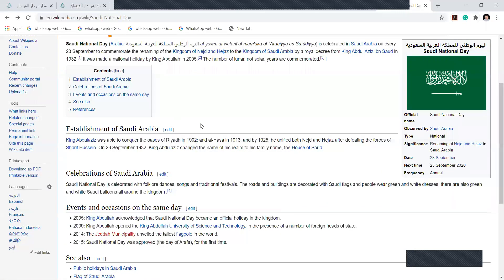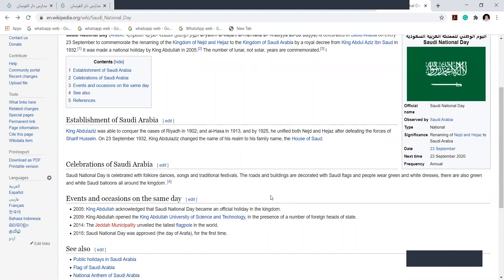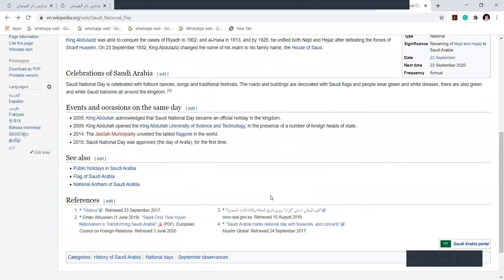It was 1932, girls. Saudi Arabia was founded in 1932, and that's the reason you are celebrating the national day here. Who actually conquered it was King Abdulaziz, who conquered the oasis in Riyadh in 1902, and then he unified by some forces. On 23rd September 1932, he changed the name of the realm to his family name, the House of Saud. And how do you all celebrate the national day? By folk dances, festivals, the roads are decorated, everything is decorated. You all wear white and green dresses or white and green balloons. This is a brief introduction about your Saudi National Day.